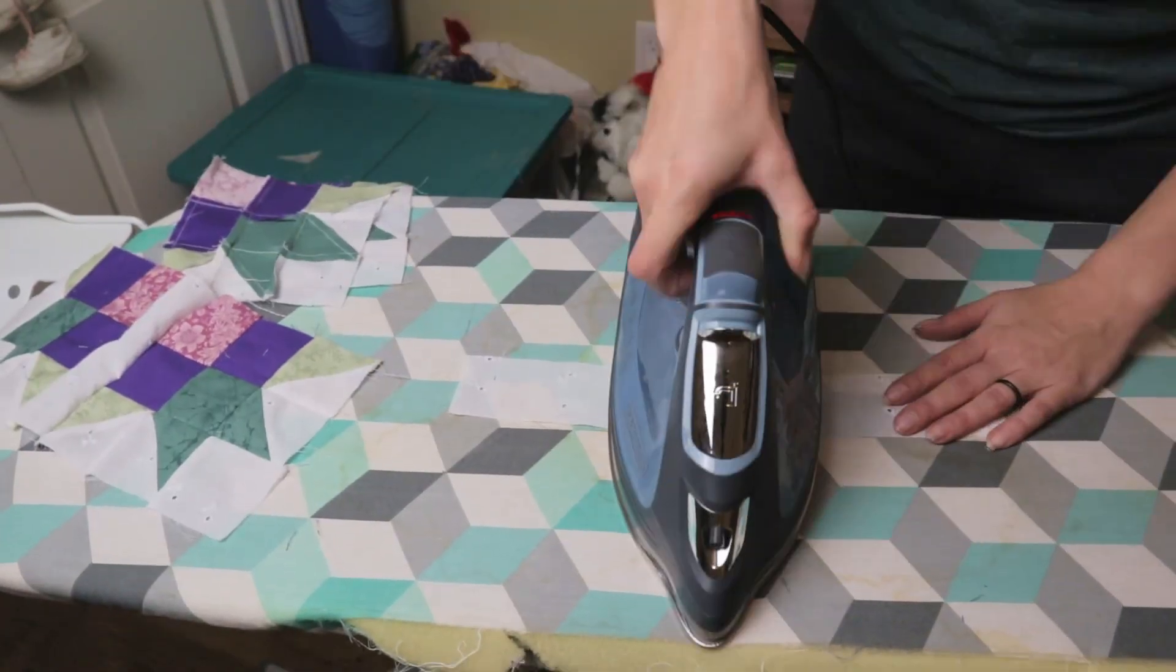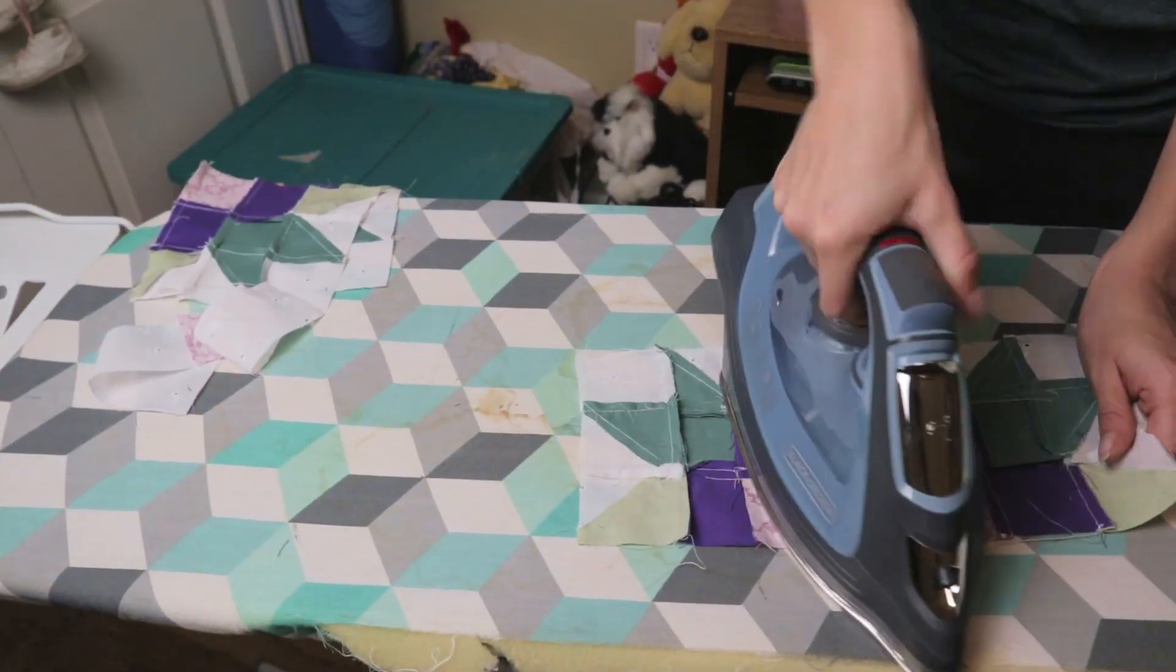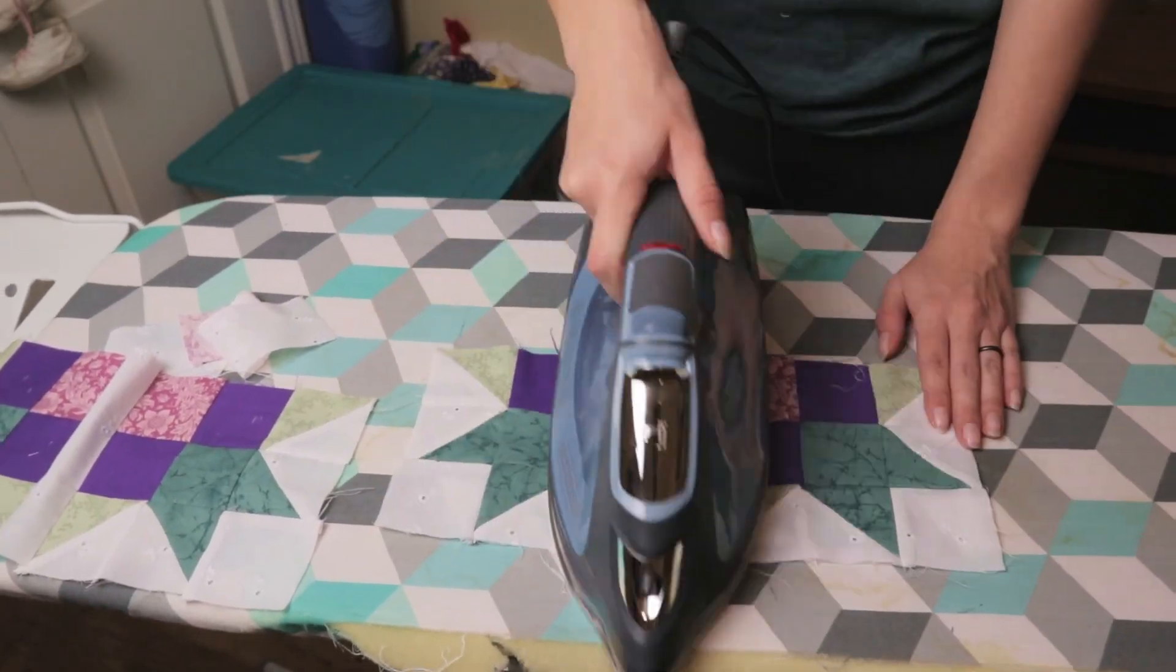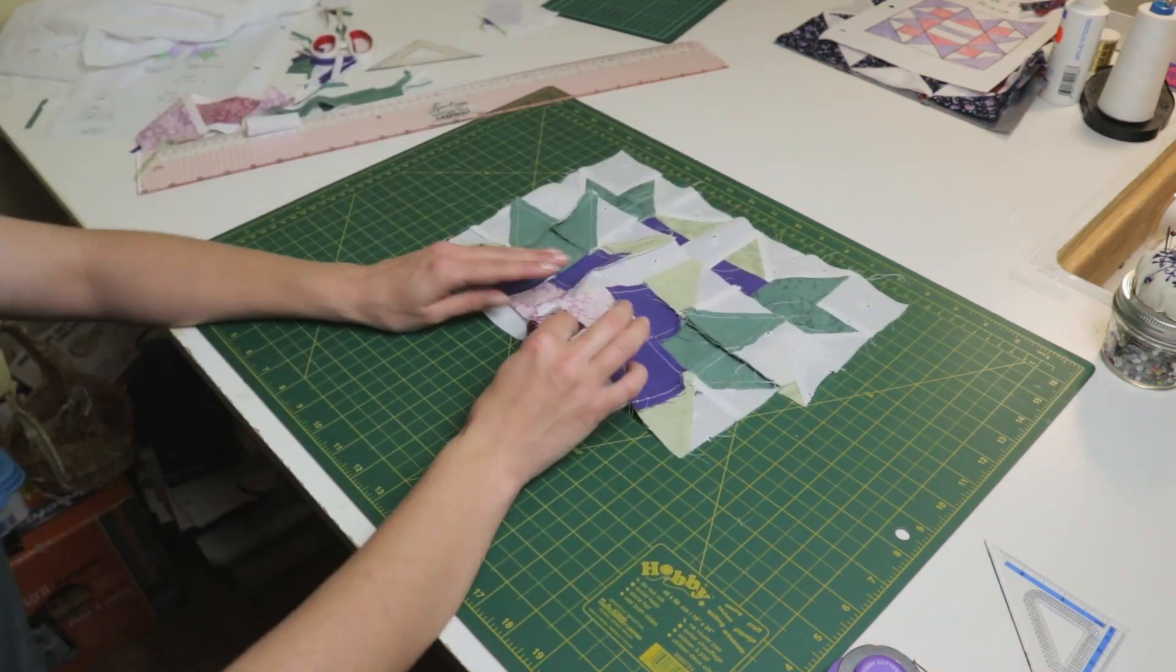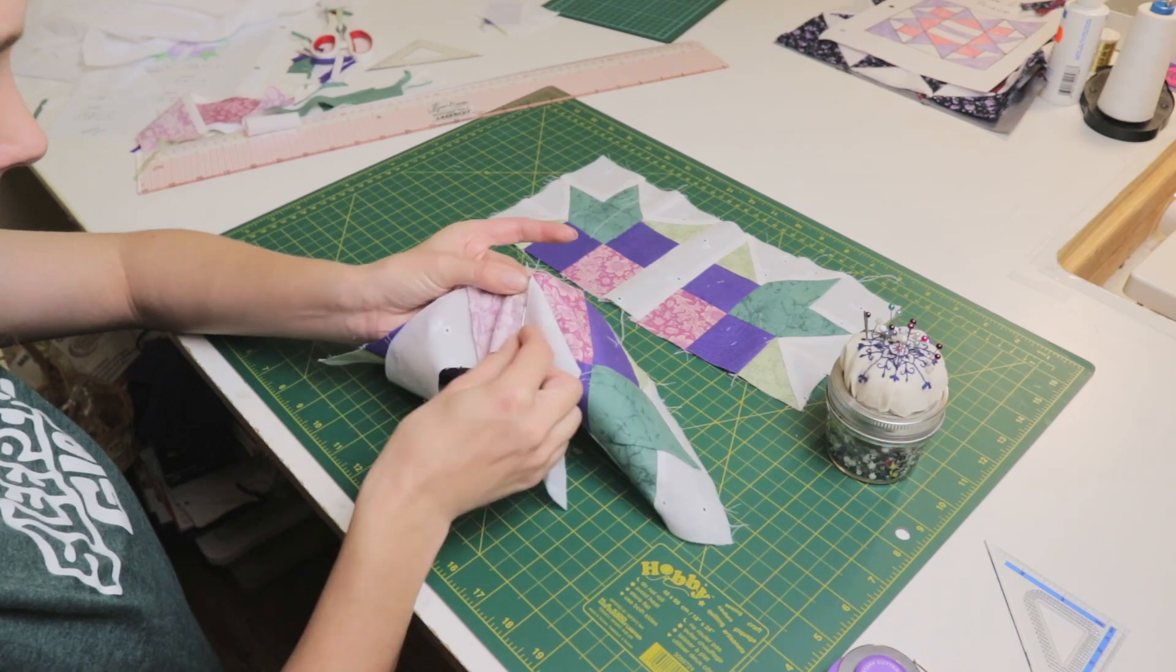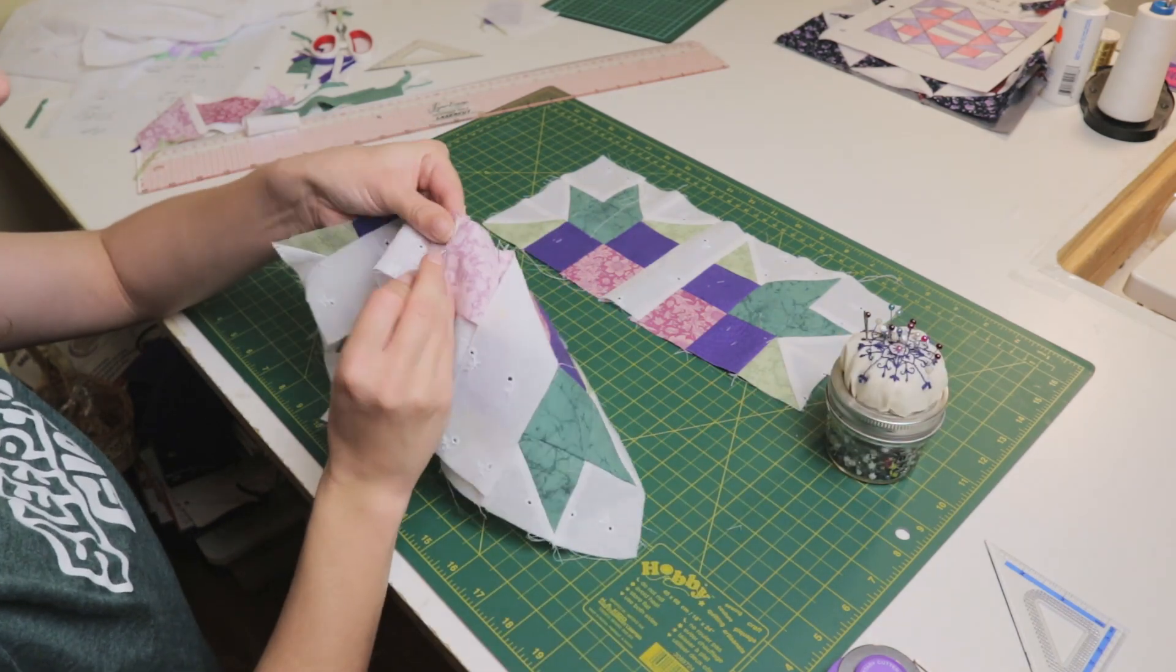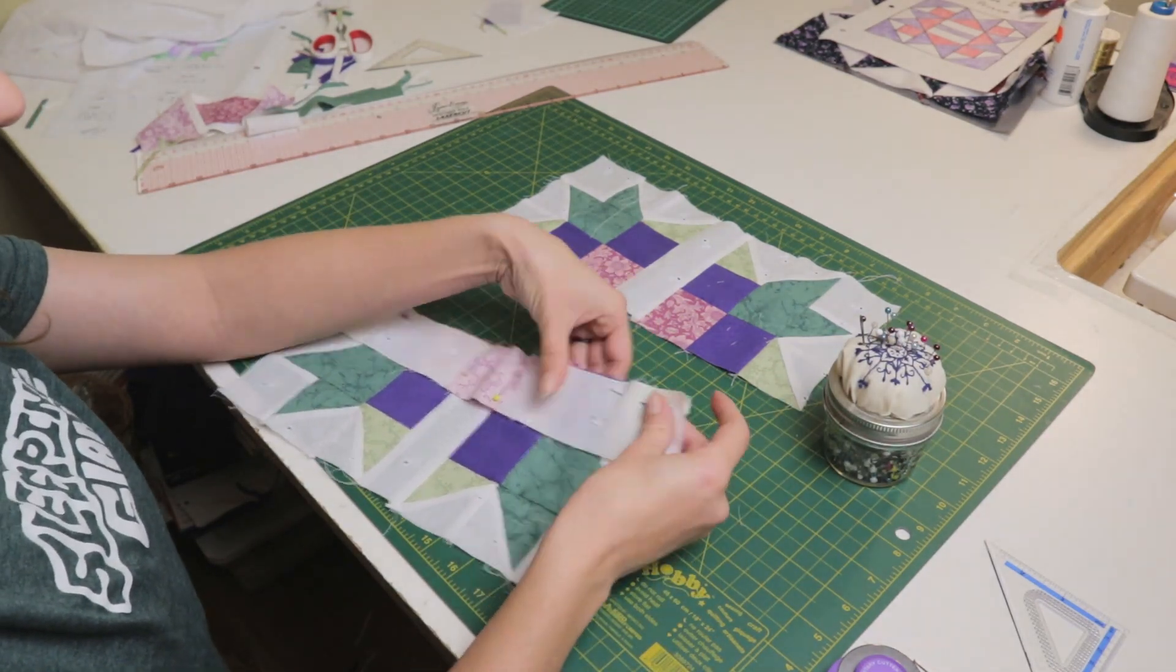And with that, it's time to press. I press the seams for the top and bottom rows towards the middle and the seams for the middle row towards the outsides. This is how the seams will nest and the corners of the middle square will sit exactly where I want them to be. Finally, I pinned the rows together for the final sewing step. When pinning, I was careful to make sure I lined up the corners of the light purple squares and nested the seams.